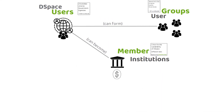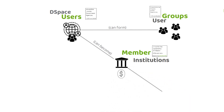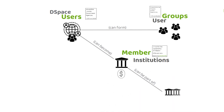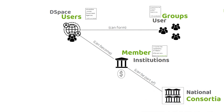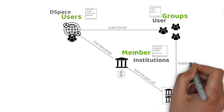Some institutions join DSpace as individual members, others as part of a group of institutions called a consortium. Since consortia are usually organized by country, they often support the activities of their respective national user group.